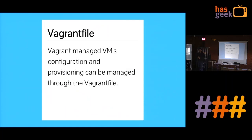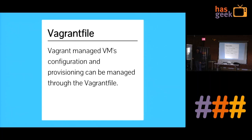The Vagrantfile manages VM configurations. I'll show you some example Vagrantfiles. You can specify the box name or a box URL — if you've uploaded it to the cloud or have a filesystem path, you can use that URL. This is a basic Vagrantfile example that does nothing advanced. More advanced Vagrantfiles can specify an IP address so that any web server running inside Vagrant can be accessed from outside the VM at that IP.